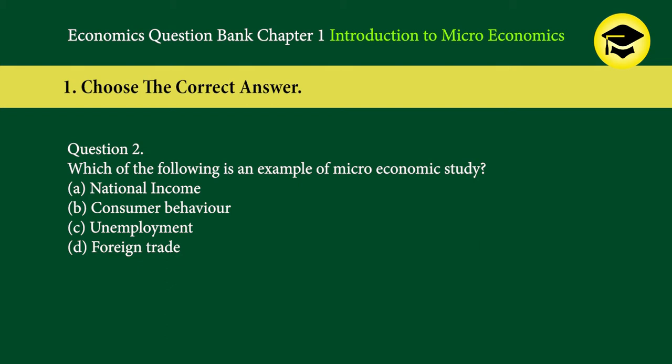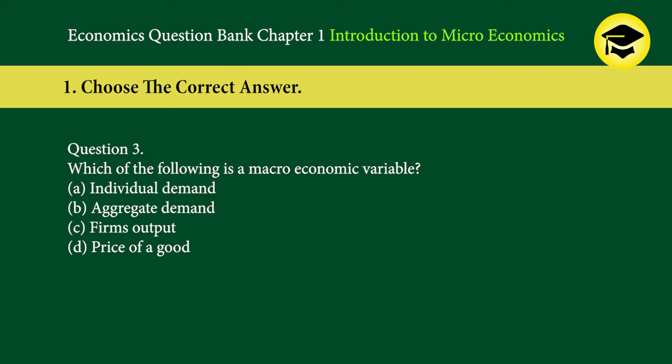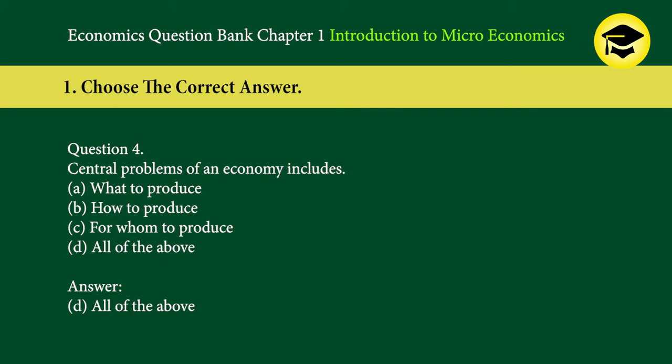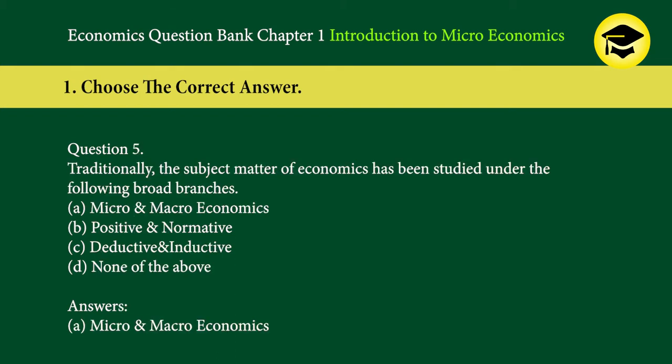Question 3: Which of the following is a macroeconomic variable? A. Individual demand, B. Aggregate demand, C. Firm's output, D. Price of a good. Answer: B. Aggregate demand. Question 4: Central problems of an economy include — A. what to produce, B. how to produce, C. for whom to produce, D. all of the above. Answer: D. All of the above.